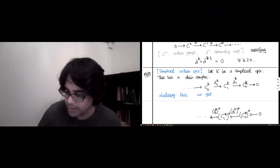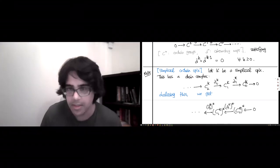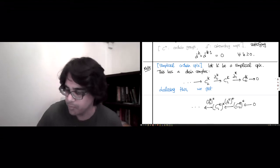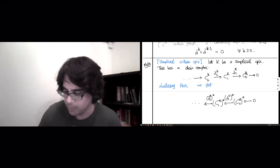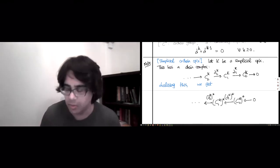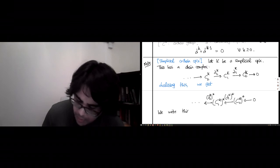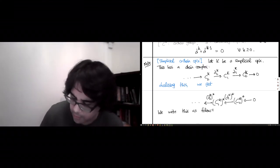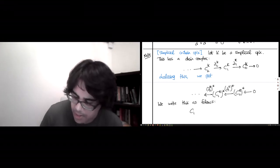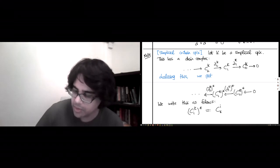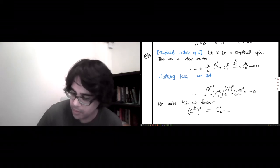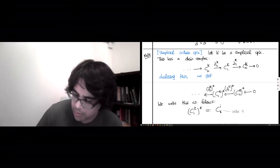In order to avoid this cumbersome garbage of writing stars everywhere, we will write this as follows, giving things new names. ci(K) star is just going to be Ci(K), the vector space of i-dimensional co-chains.